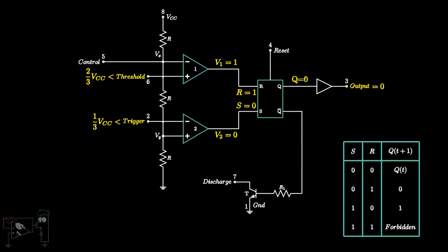This makes the output of the timer low. Hence, by controlling the voltage at the threshold pin, we are controlling the output voltage of the IC555 timer. Now suppose the threshold voltage goes below 2 by 3 VCC, and the trigger voltage goes below 1 by 3 VCC. Then we have output of comparator 1 low and 2 high.